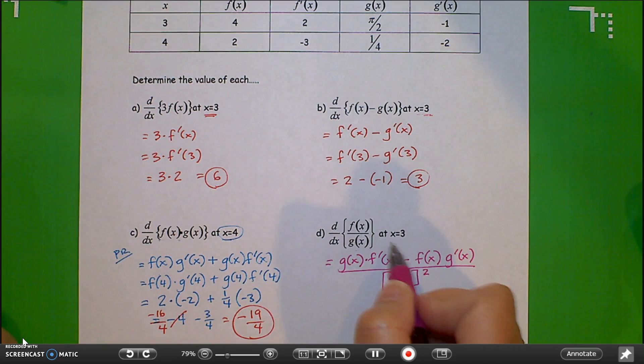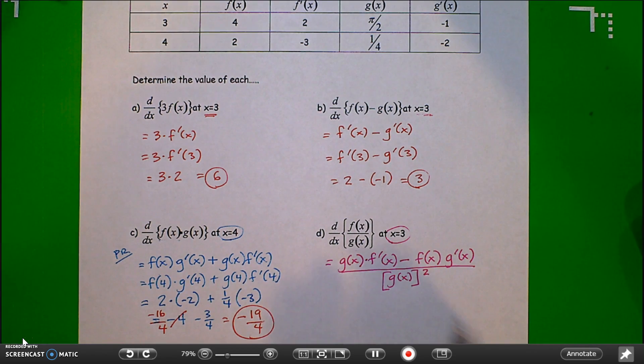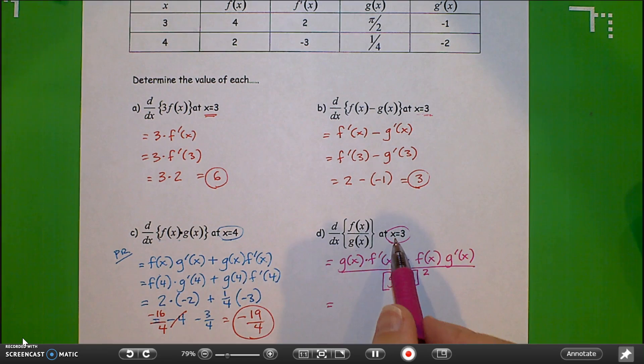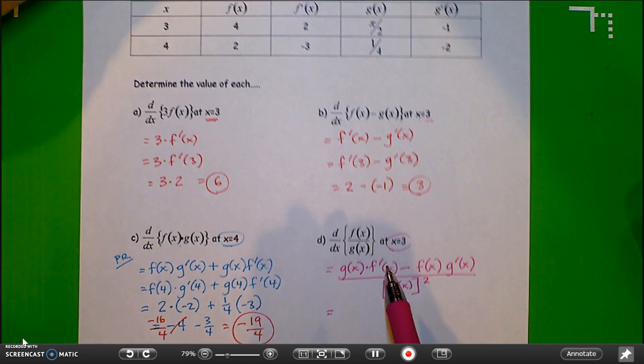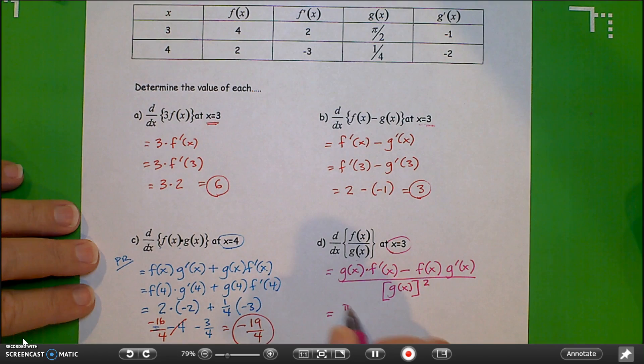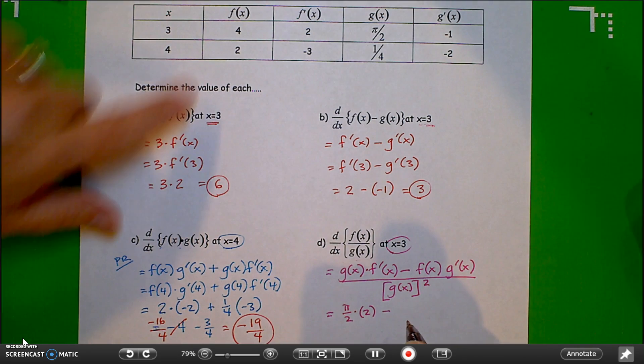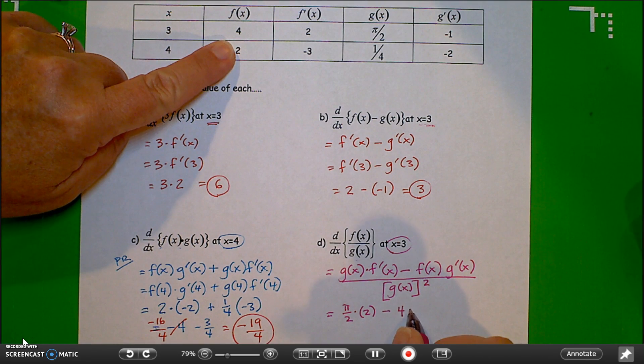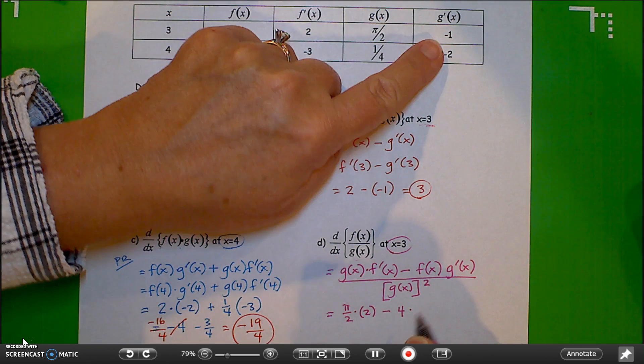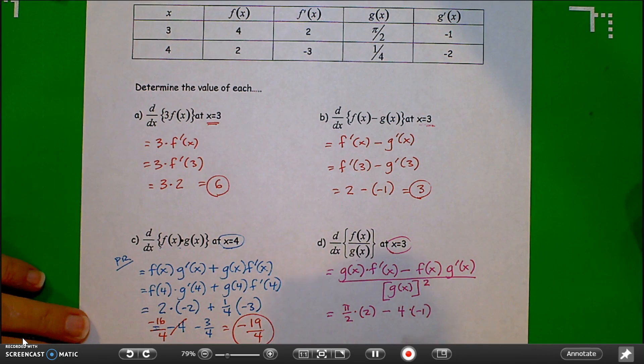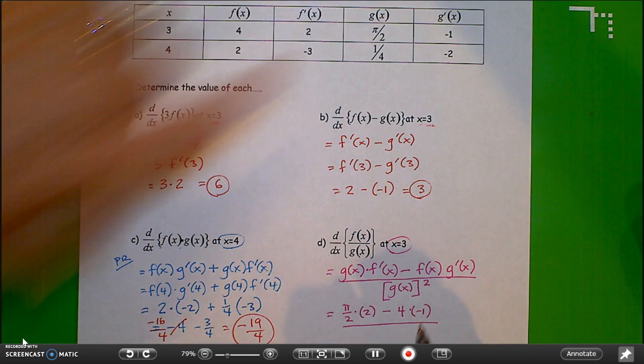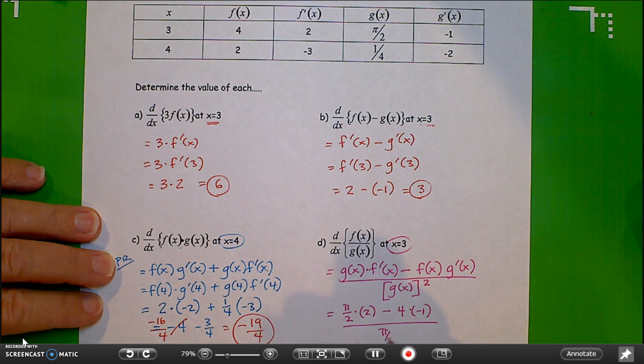And this time, this is at x equals 3. And I'm not going to sub in the 3 here. Let's see if we can do it without rewriting that next step. So I need row 3 on my table. So g of x is pi over 2, f prime of x is 2, minus f of x of 3 is 4, g prime of x at 3 is negative 1. All over g of x, g at 3 is pi over 2 squared.